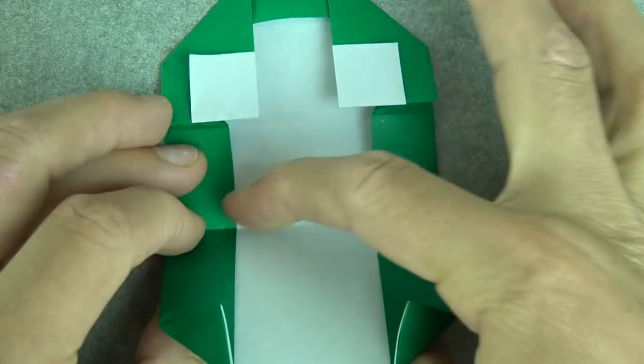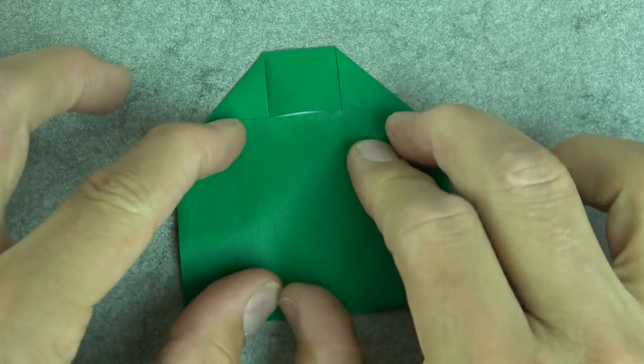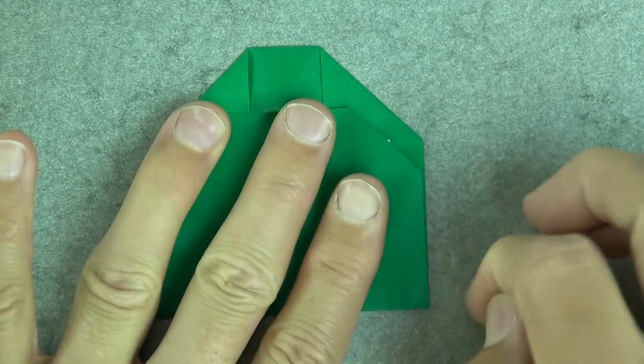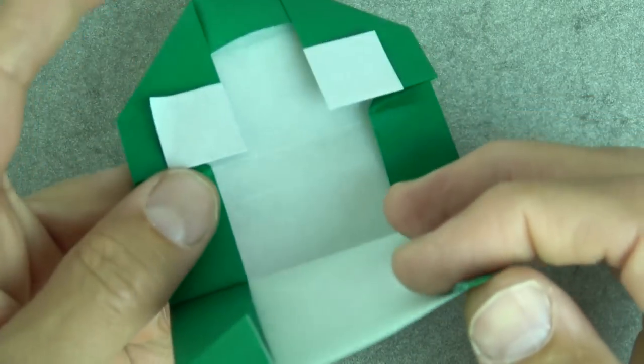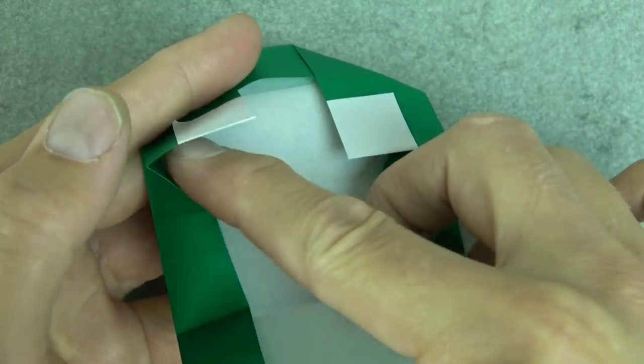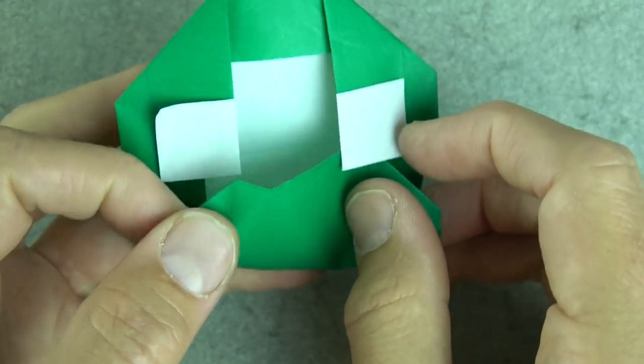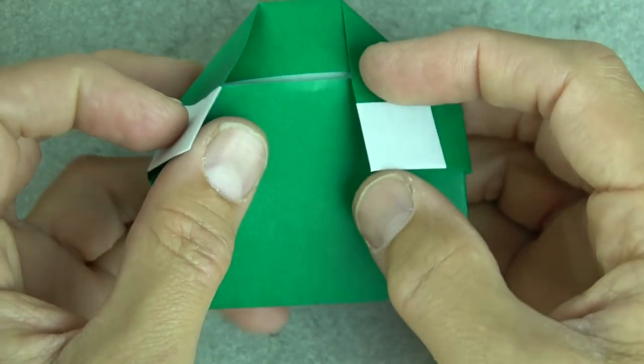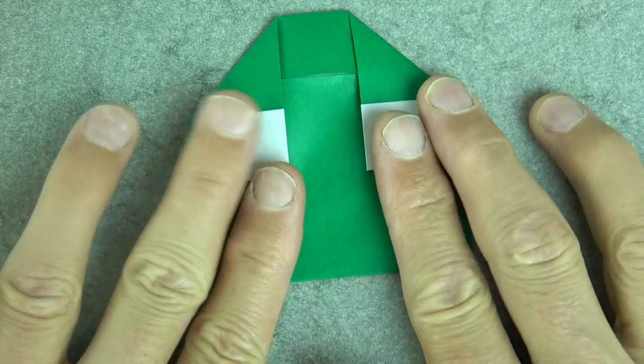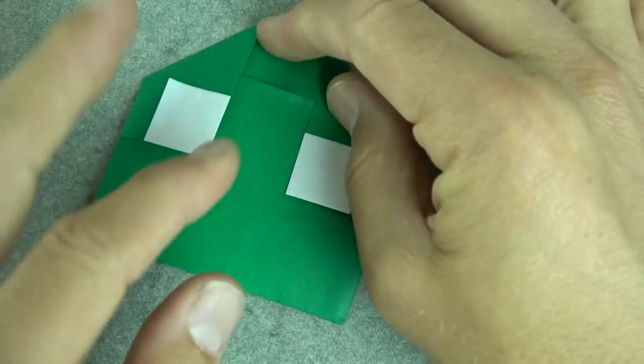Now fold this flap up on this crease. And unfold it and refold it, sticking it underneath the two eyes into this pocket. Like that. And rotate.